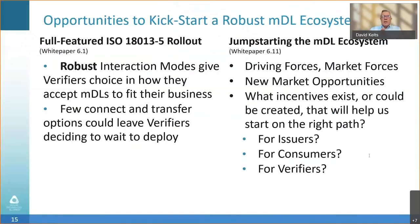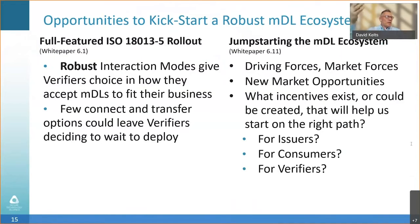These are all outlined in section 6 of the white paper on the STA website and available from mdlconnection.com. That white paper lists 11 different risks and challenges to the ecosystem. I'm going to talk about two of them myself, and then the others are covering the other challenges.